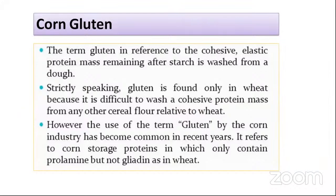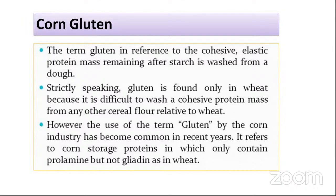The term 'gluten' is technically associated with wheat and somewhat with rye, but in industry it is also used for corn protein. This is the difference between wheat gluten and corn gluten — do not confuse the two. In the case of corn gluten, there are only prolamines present, but there is no gliadin present, unlike in wheat. So the basic difference between corn and wheat gluten is that corn gluten lacks the gliadin fraction of proteins.